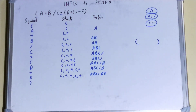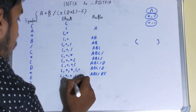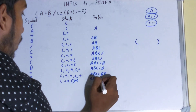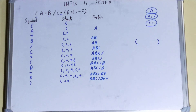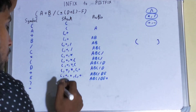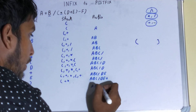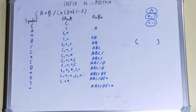Now we encounter a closing bracket. As I mentioned, whenever we encounter a closing bracket, we pop out everything down to the matching opening bracket — so we pop plus, giving postfix A B C / D E +. Next comes minus. Minus has lower priority than asterisk, so we pop asterisk out. Minus and plus are the same priority, so we pop plus out too.